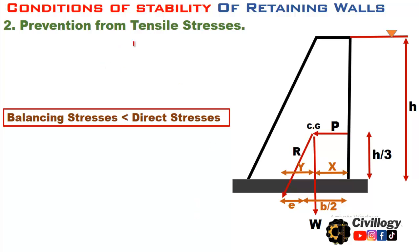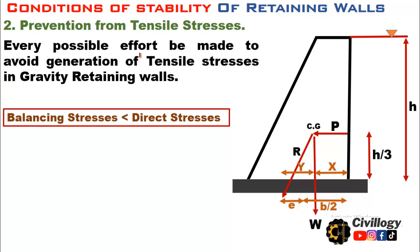The second condition is prevention from tensile stresses. Every possible effort must be made to avoid generation of tensile stresses in gravity retaining walls. A gravity retaining wall is stable depending upon its own weight — that is why it is called a gravity wall. It is usually made of concrete or stone masonry, which is very weak in tension. So it is necessary to avoid generating tensile stresses. The condition is that bending stresses should be less than direct stresses.